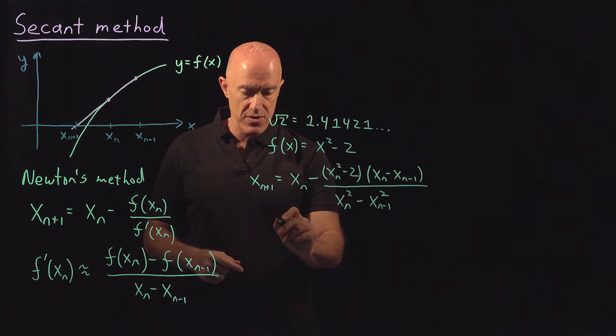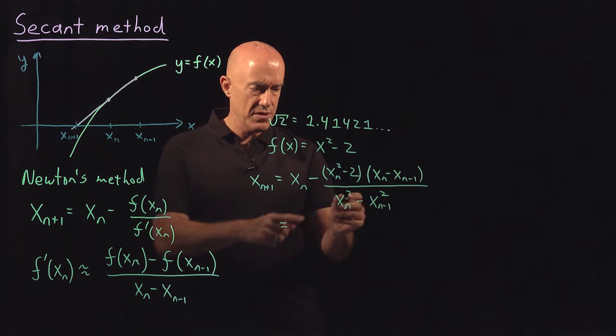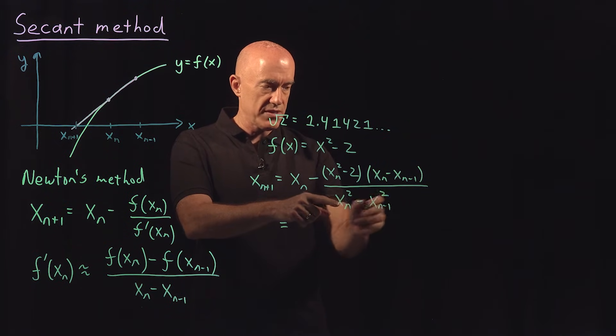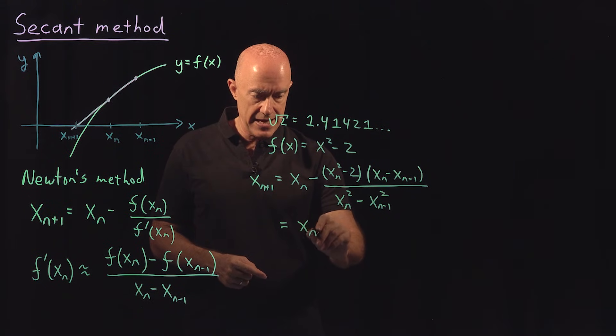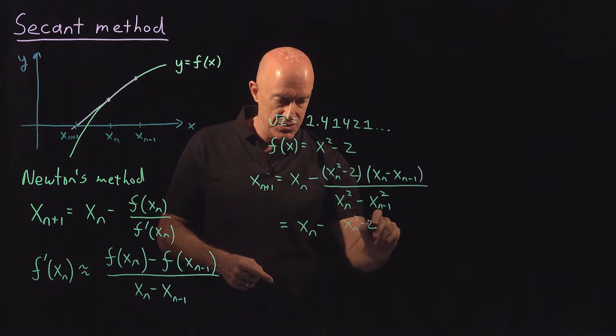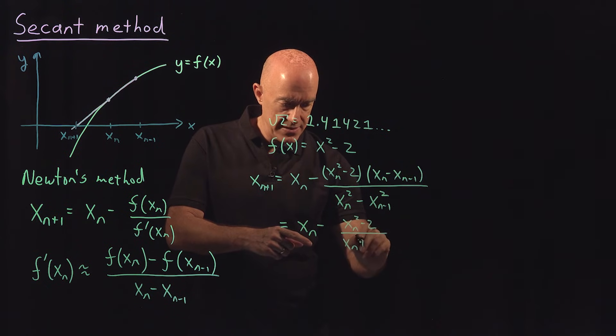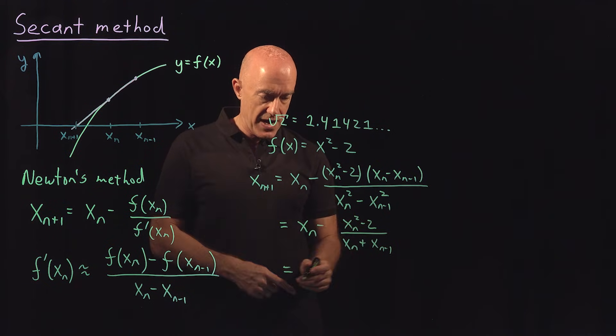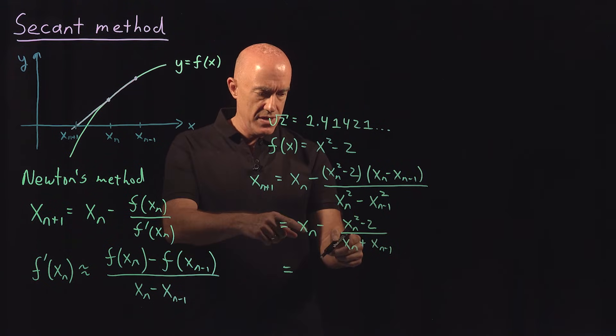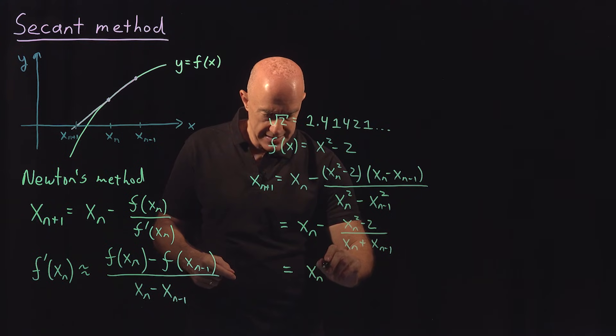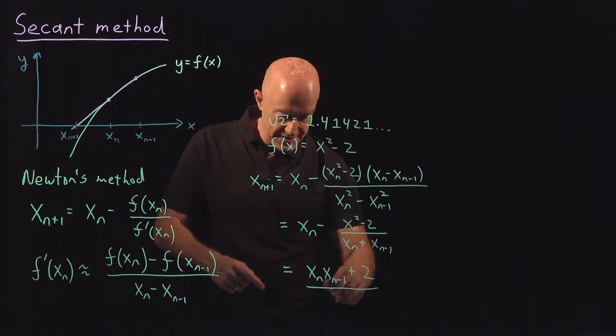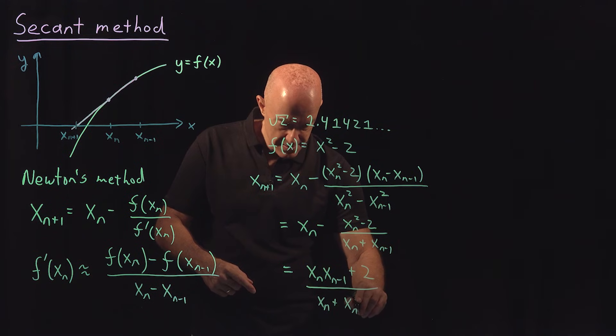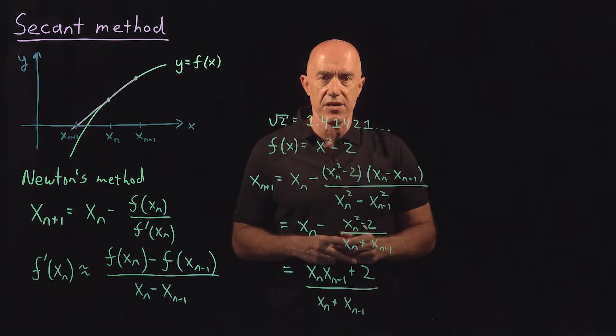Since I'm doing it on the light board, I want to make the calculation as easy as possible. This x_n² - x_(n-1)² factors, so that I can cancel x_n - x_(n-1). And we get x_n - (x_n² - 2)/(x_n + x_(n-1)). We simplify this under a common denominator: x_n·x_(n-1) plus 2 divided by x_n + x_(n-1). That will be an easy calculation by hand.